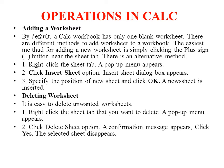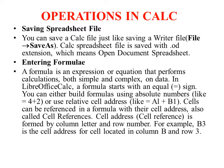Next is saving a spreadsheet file. We save the file using the File menu — either Save or Save As. The file extension is .ods, which stands for Open Document Spreadsheet. We click Save or Save As to save our spreadsheet file.